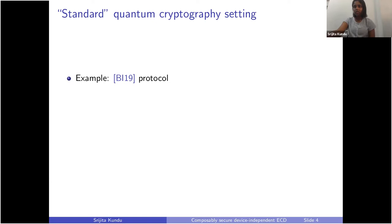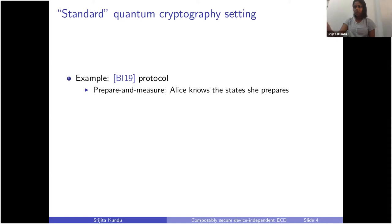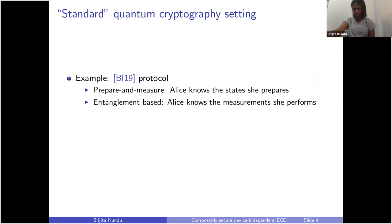Let me describe what the standard device-dependent setting is. An example is the BN-19 protocol. These can be either prepare-and-measure type scenarios where the honest party — in this case Alice — knows the states she prepares but the measurements might be untrusted, or scenarios where the measurements are trusted but the states are known, or both can be trusted in more limited sorts of protocols.